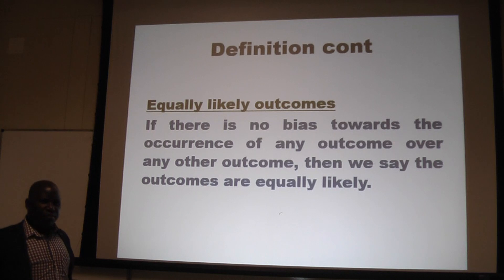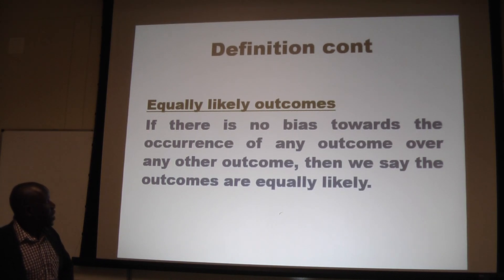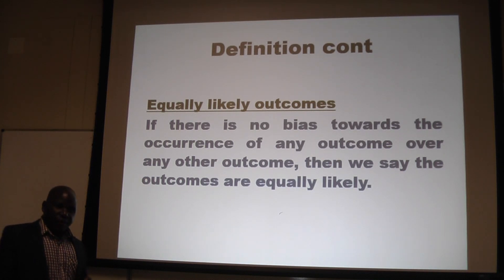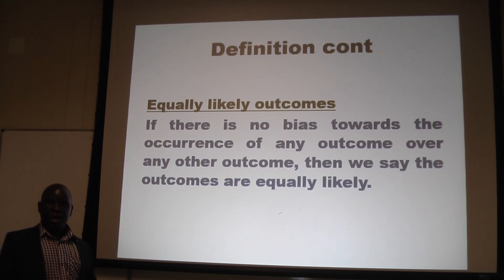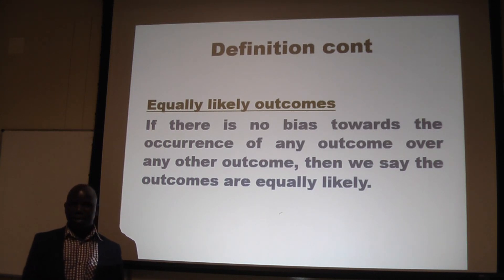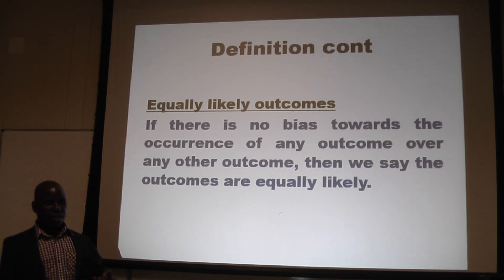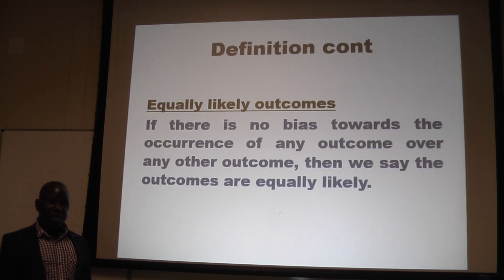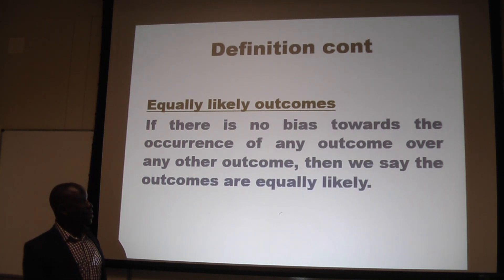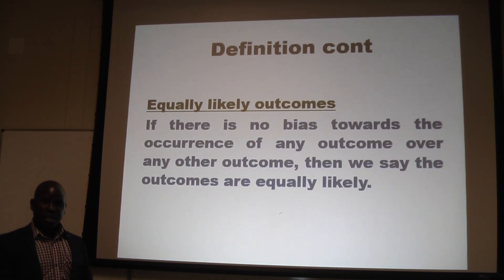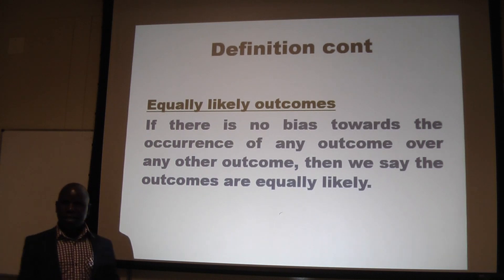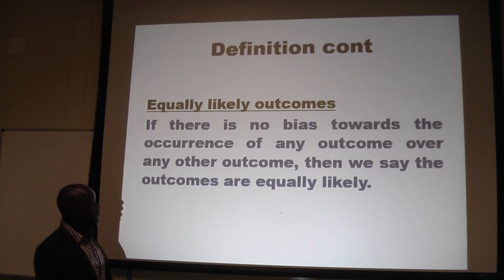What do we mean when we say events are equally likely outcomes? If there is no bias in the occurrence of one event, we call such events equally likely. If we toss a coin, assuming that the coin is not tampered with, the chance of it landing head up is the same as the chance of it landing tail up. We call the events — head appearing and tail appearing — equally likely.